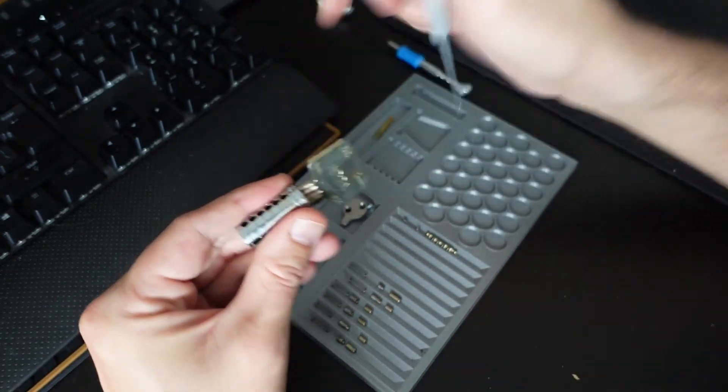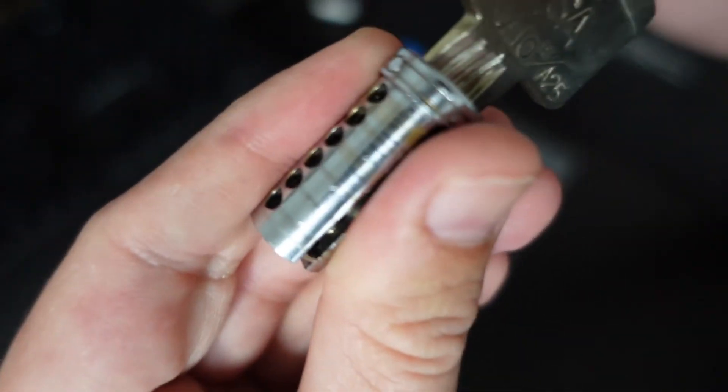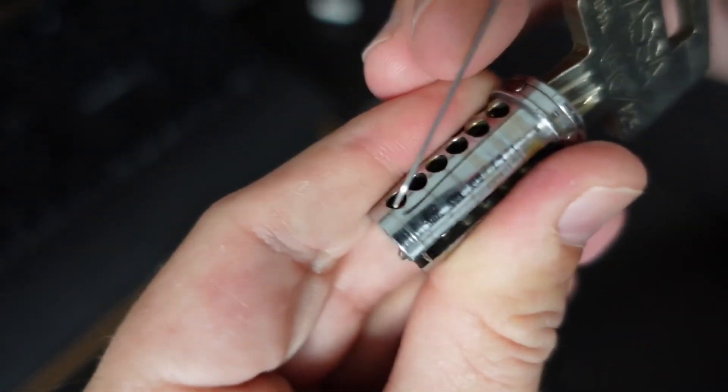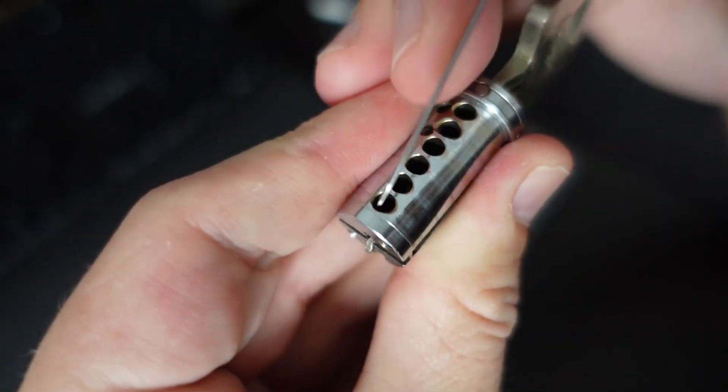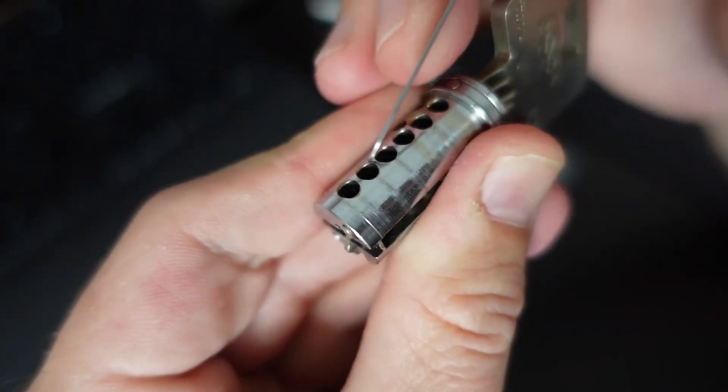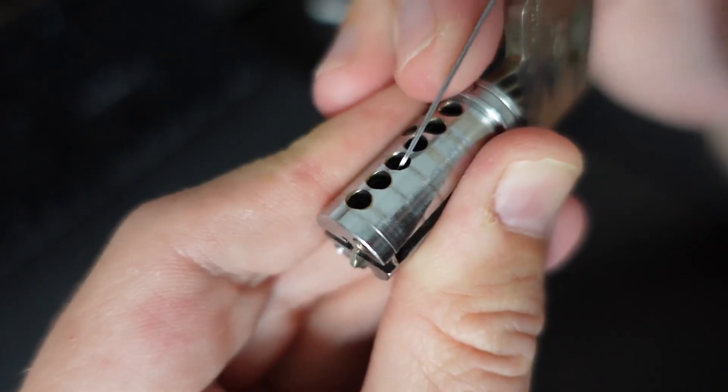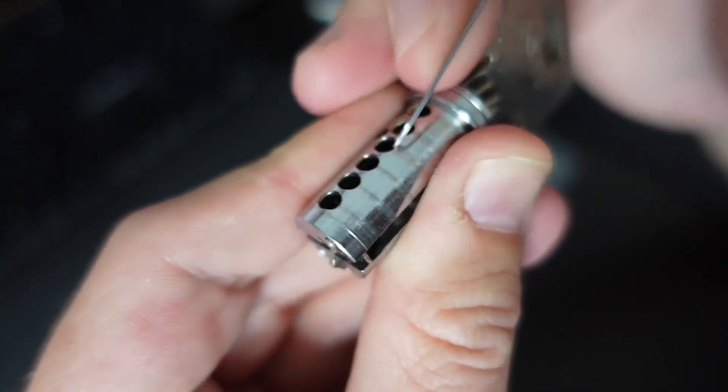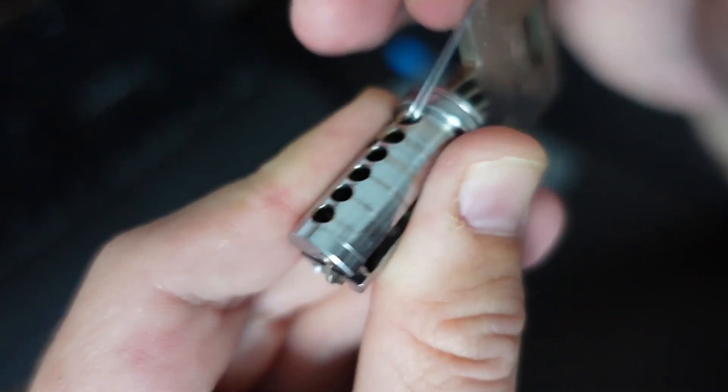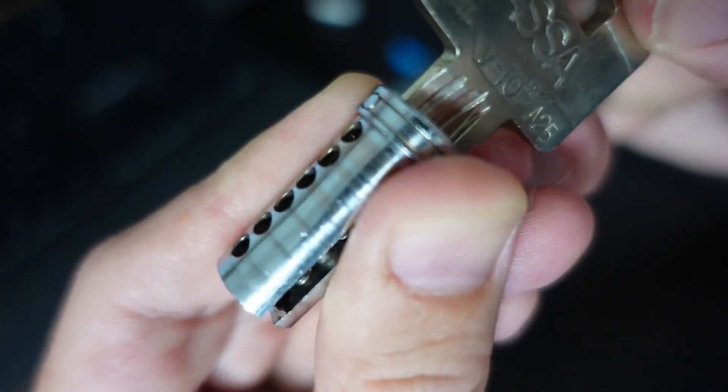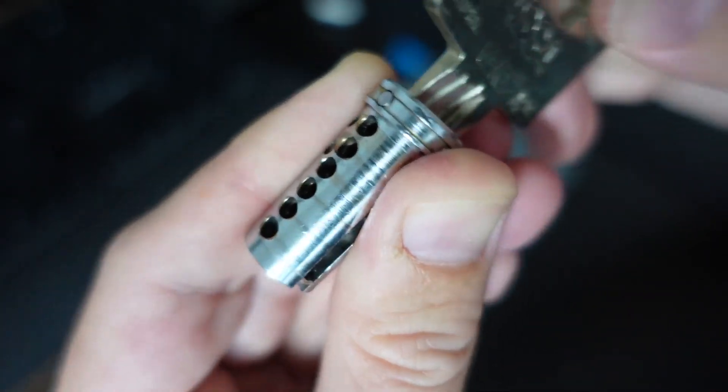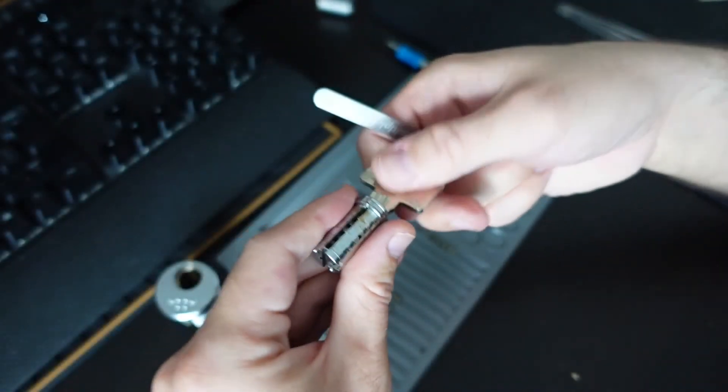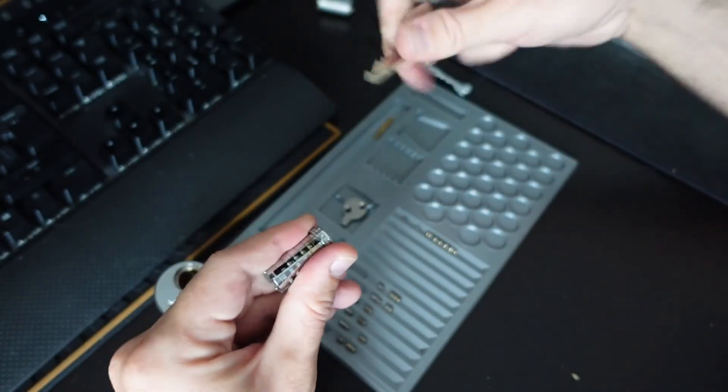Before I forget, I should show you that the lock has this counter milling. No milling in chamber 3, of course. Not sure if this was visible, but it was definitely audible.